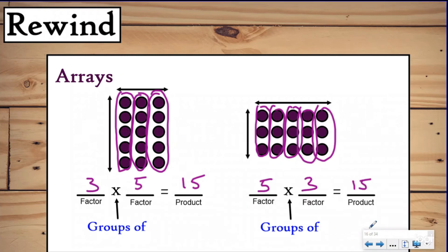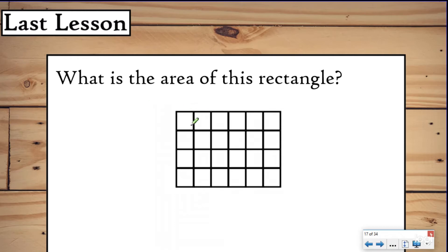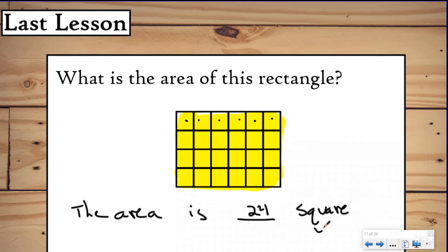We want to take your array knowledge and apply it to the area knowledge from last lesson to help come up with our formula today. Last lesson we talked about finding the area of a rectangle — how many square units we needed to cover the surface. We counted them by ones: one, two, three... and then recognized a pattern that if there are six in the first row we could skip count by six: six, twelve, eighteen, twenty-four. The area is 24 square units, but that takes a long time especially when counting by ones.